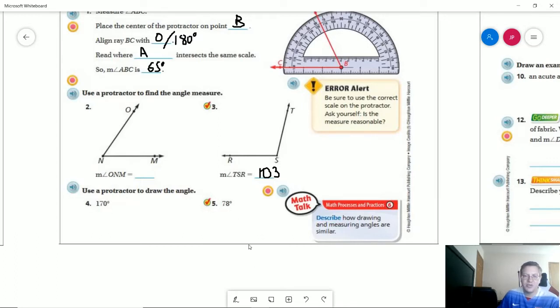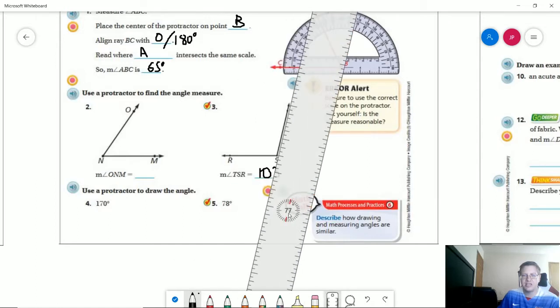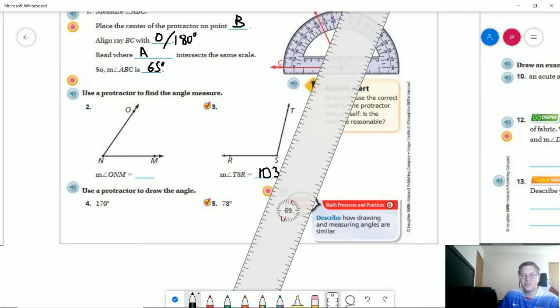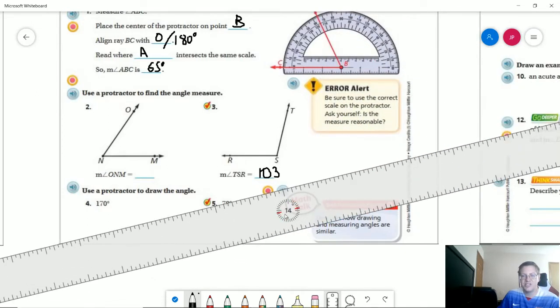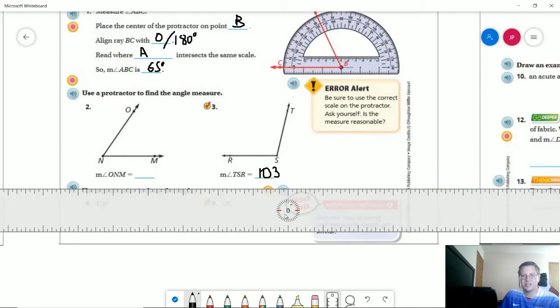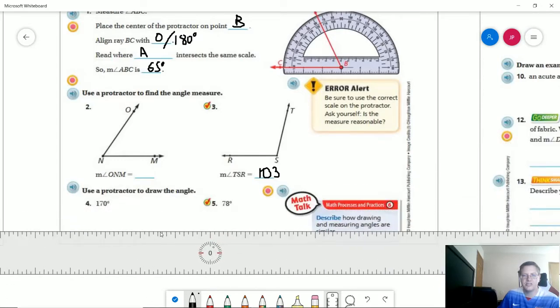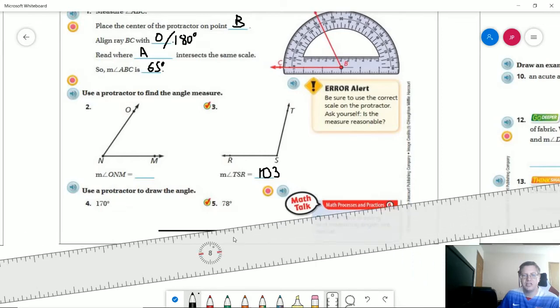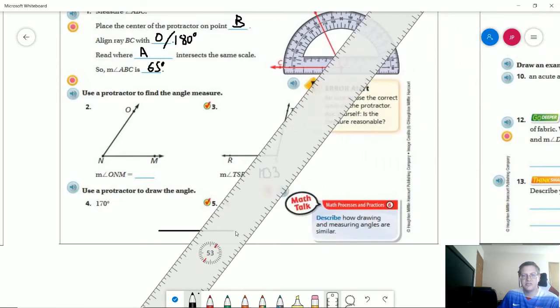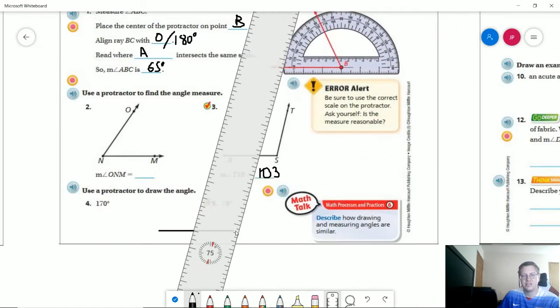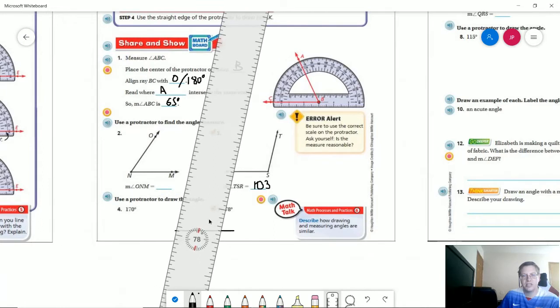So for number five, they want us to draw an angle that would be 78 degrees. We can do that. That would be really close to what I started with, but I'm going to go ahead and get my straight line first. And so I'm going to use this as my straight line and then I'm going to rotate till I get to 78 degrees.